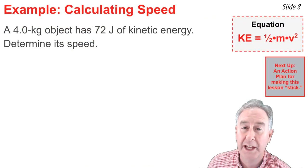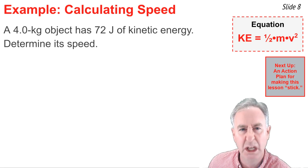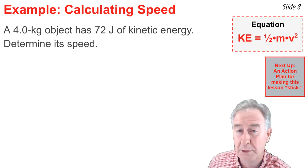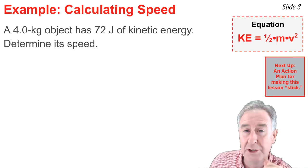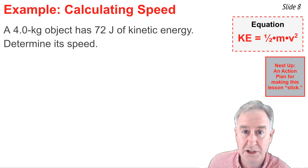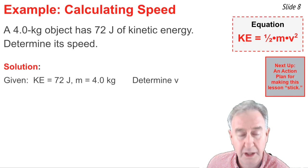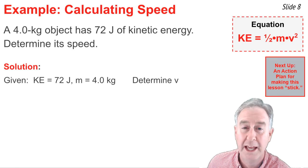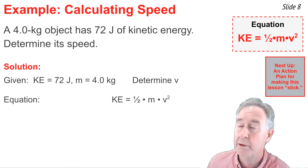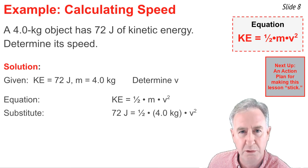Of the three forms of that kinetic energy equation, the form which is most difficult for students is that last form, the v equals equation. So I'm going to do one practice problem in which I solve for v using the kinetic energy equation. Here's the problem I'm trying to solve: a 4.0 kilogram object has 72 joules of kinetic energy. Determine its speed or the v value. The solution begins by writing down what you know. You know that kinetic energy equals 72 joules and you know that the mass equals 4.0 kilograms. And I'm trying to solve for the v value.